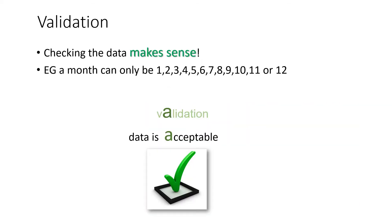Validation is different — this is where the computer checks that the data you've inputted makes sense. An example is a month: it can only have the values 1 to 12, nothing else. The way you can remember it is that with validation we are checking that the data is acceptable.